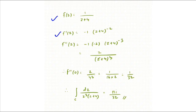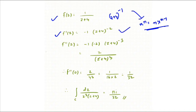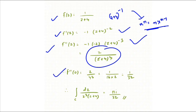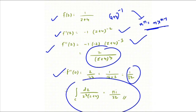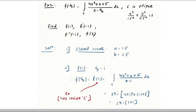Using the power rule — treating (z + 4)^(−1) with the chain rule — we get f'(z), and similarly f''(z) = 2/(z + 4)³. Substituting z₀ = 0 gives f''(0) = 2/4³ = 2/64 = 1/32. Therefore the final answer for Example 1 is ∫_C dz / [z³(z + 4)] = πi/32.